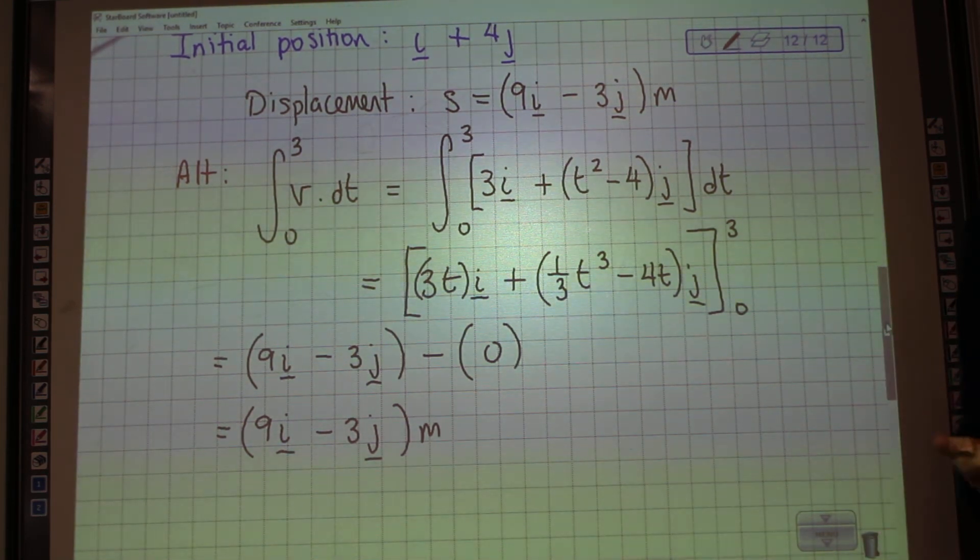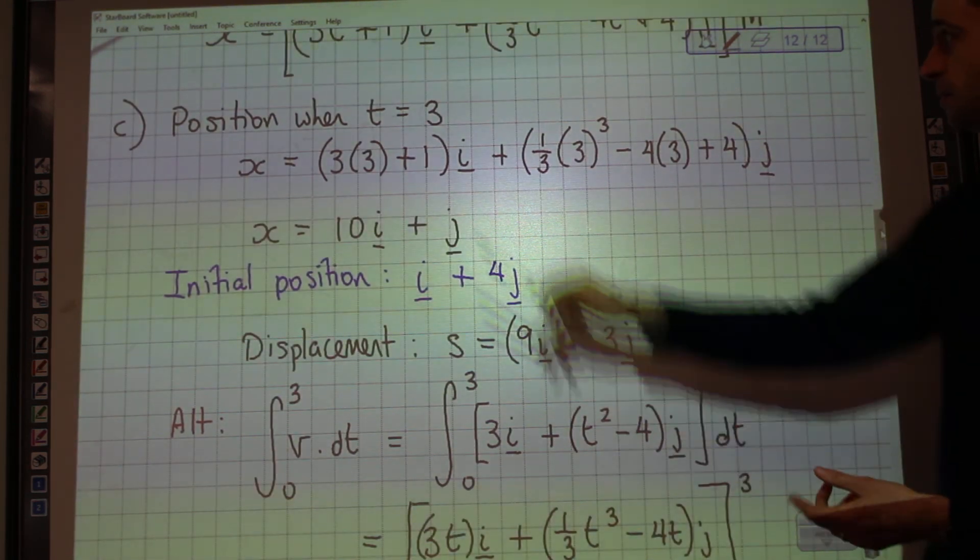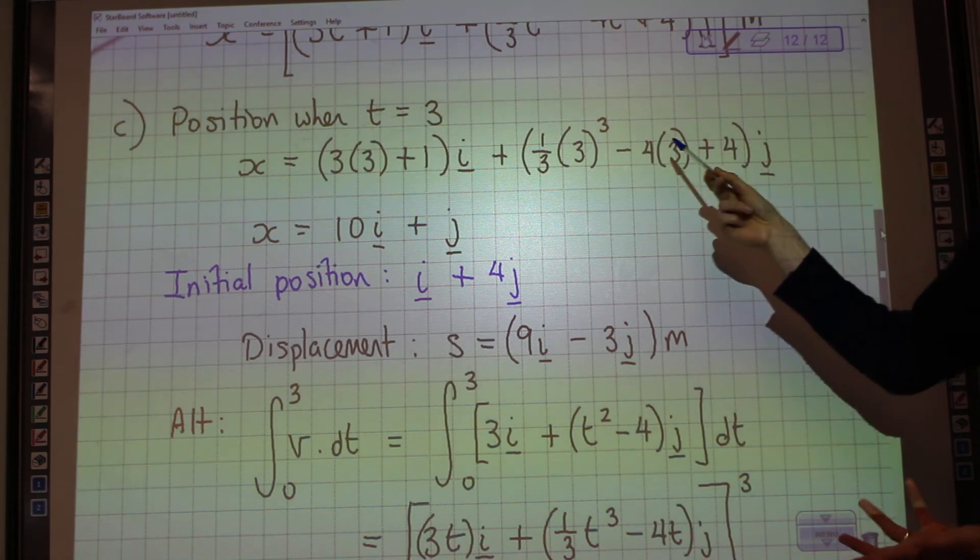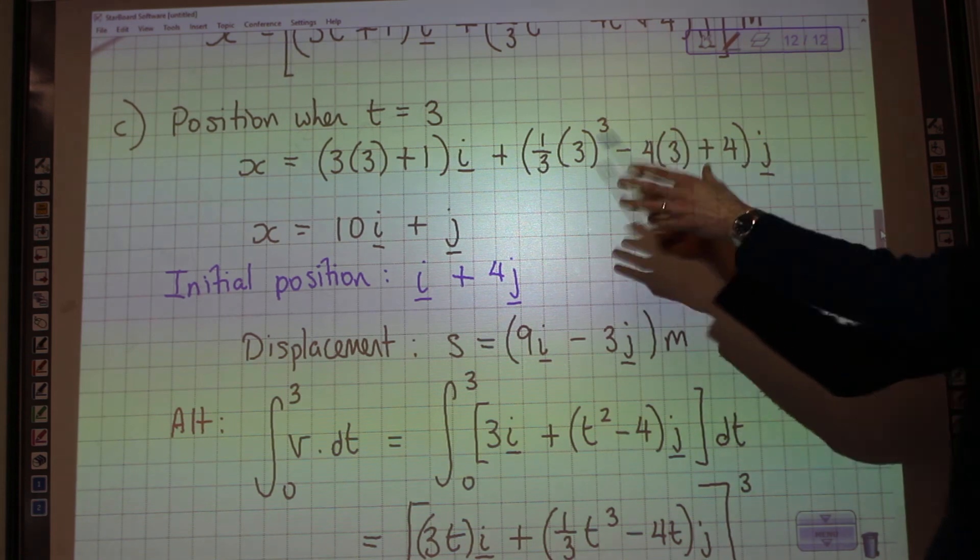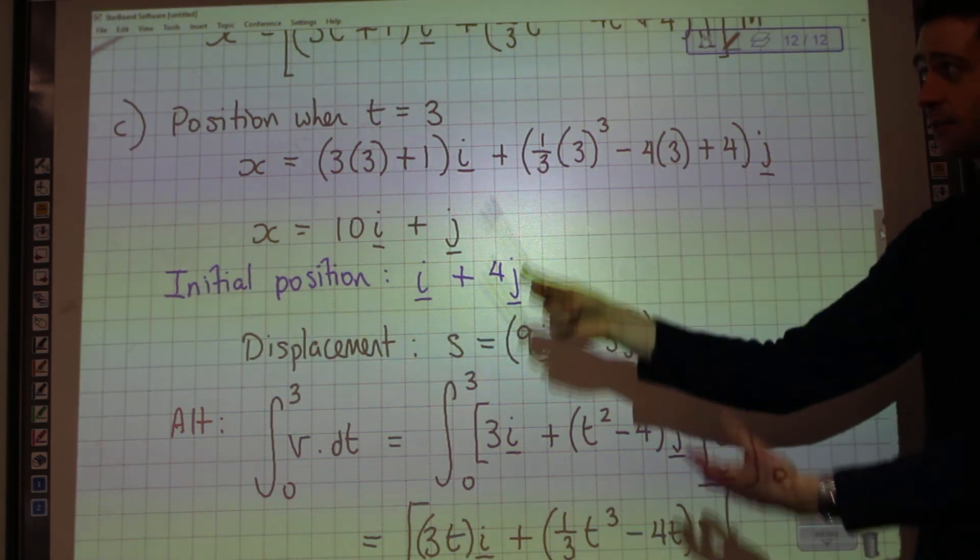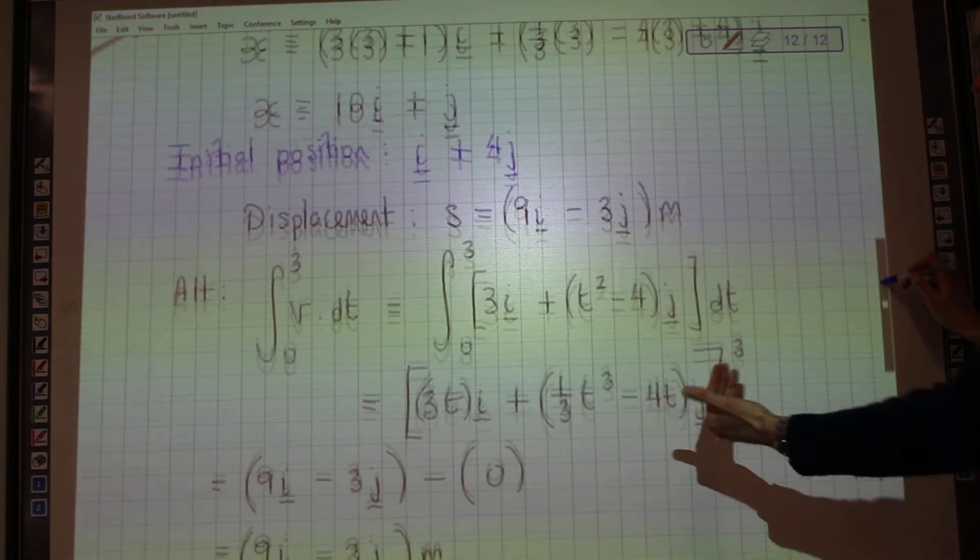And how you approach this is up to you. In this scenario, my preference is to say, well, sub in t is 3 because we've already integrated it. And then work out where it is in relation to where you started. If you hadn't already integrated it and you didn't have an expression for its position, then you could integrate velocity,